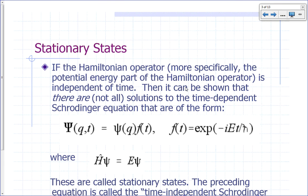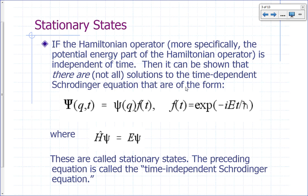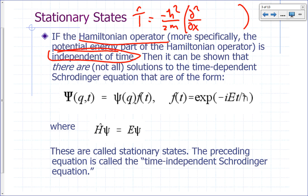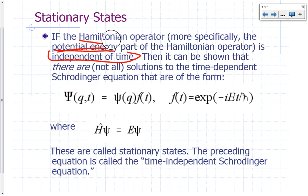We're going to focus on what are known as stationary states, which arise when the Hamiltonian operator — more specifically the potential energy part — is independent of time. The kinetic energy operator, negative h-bar squared over 2m times the sum of second derivatives with respect to x, y, and z, has no time dependence. So the part of the Hamiltonian that could depend on time is the potential energy.